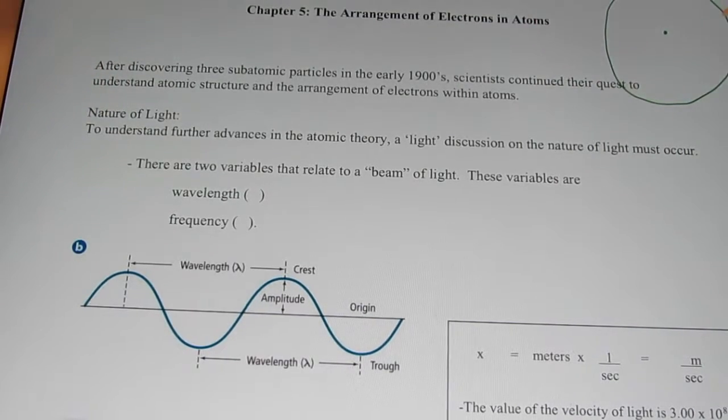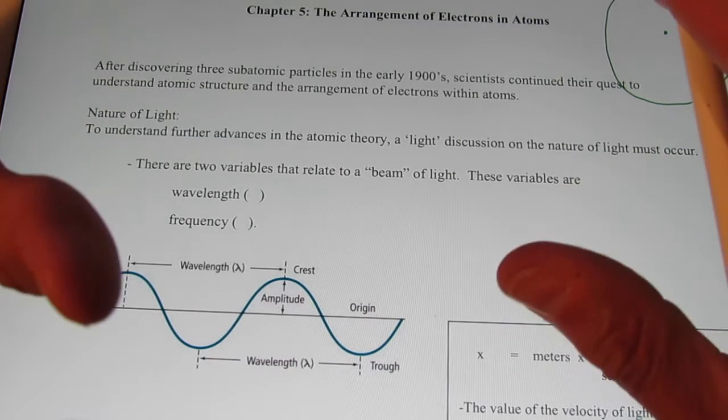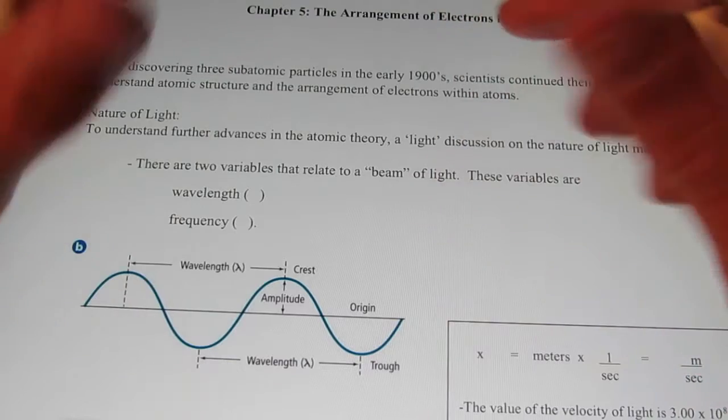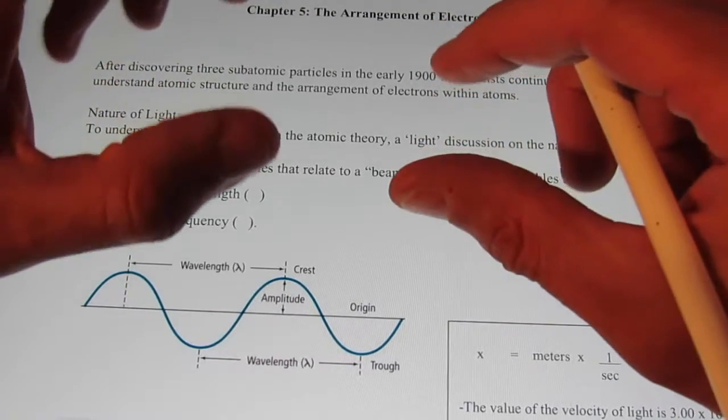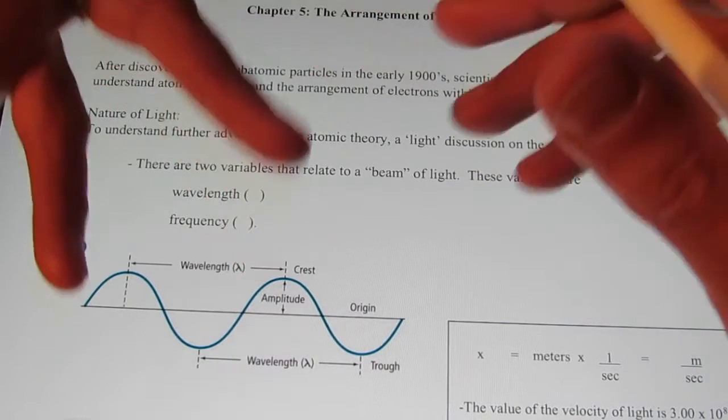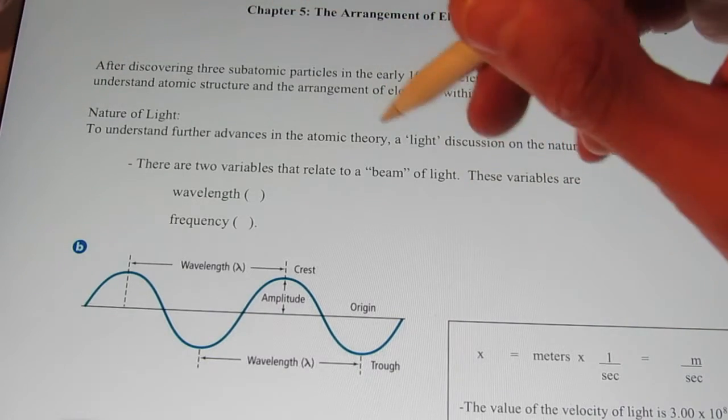Now, in this particular section of our notes in the atomic theory, we're going to actually focus our attention on the behavior of electrons as they are buzzing around that nucleus. Before we can do that, we need to understand a little bit about the nature of light. So, we're going to take a little diversion, and as part of that diversion, I want to show you a demonstration.